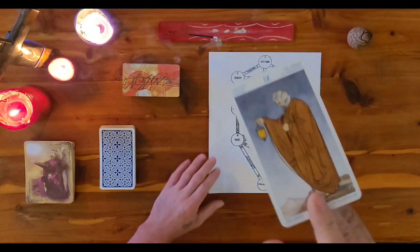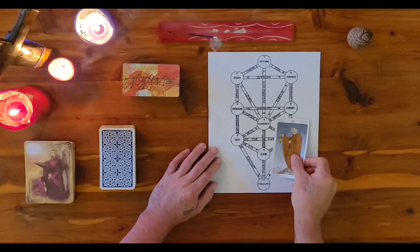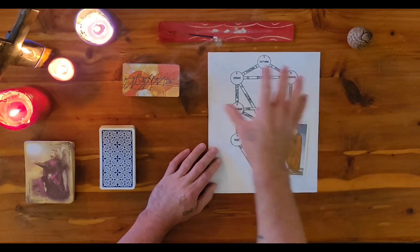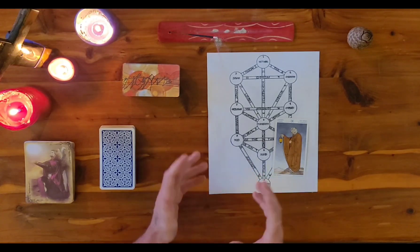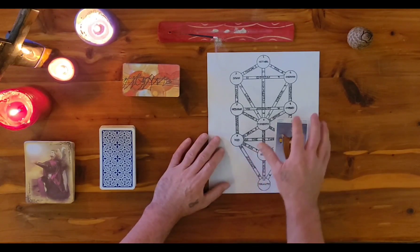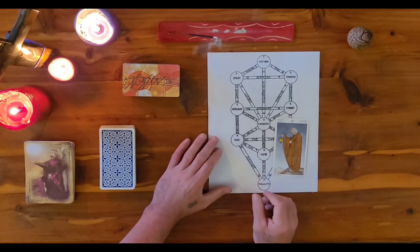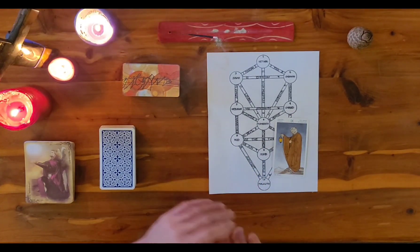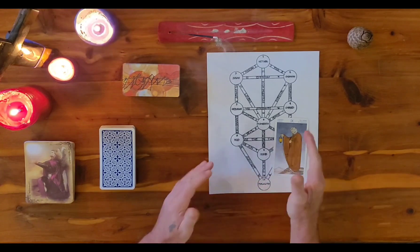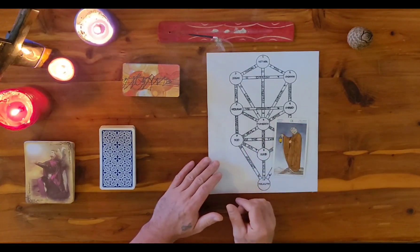And the Hermit sits on the life path right here on the Kabbalic Tree of Life between Sphere 6, Tephrith, which is the divine consciousness, and Sphere 4, Chesed, which is our ability towards mercy and our sense of compassion. So this is a beautiful energy here, Capricorn.